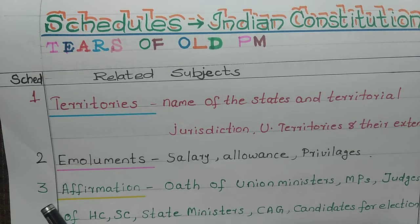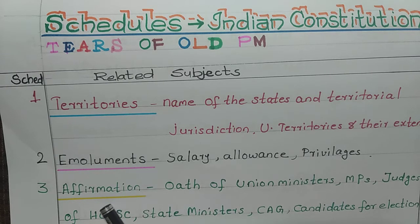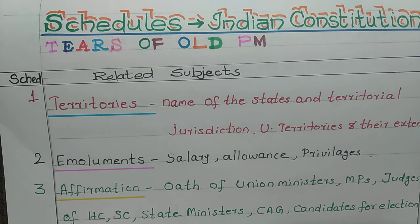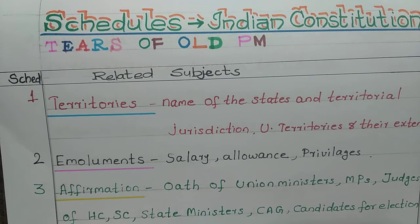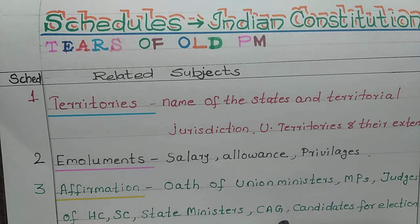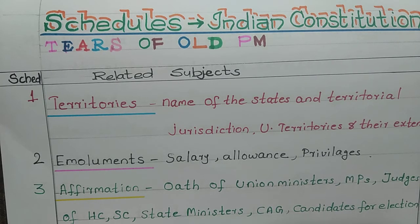Third schedule: the keyword is affirmation. A means affirmation. Affirmation is nothing but the oath of union ministers, members of parliament, judges of the High Court, Supreme Court, state ministers, CAG (Comptroller and Auditor General), and candidates for election, etc. The affirmation of all these members comes under schedule third.